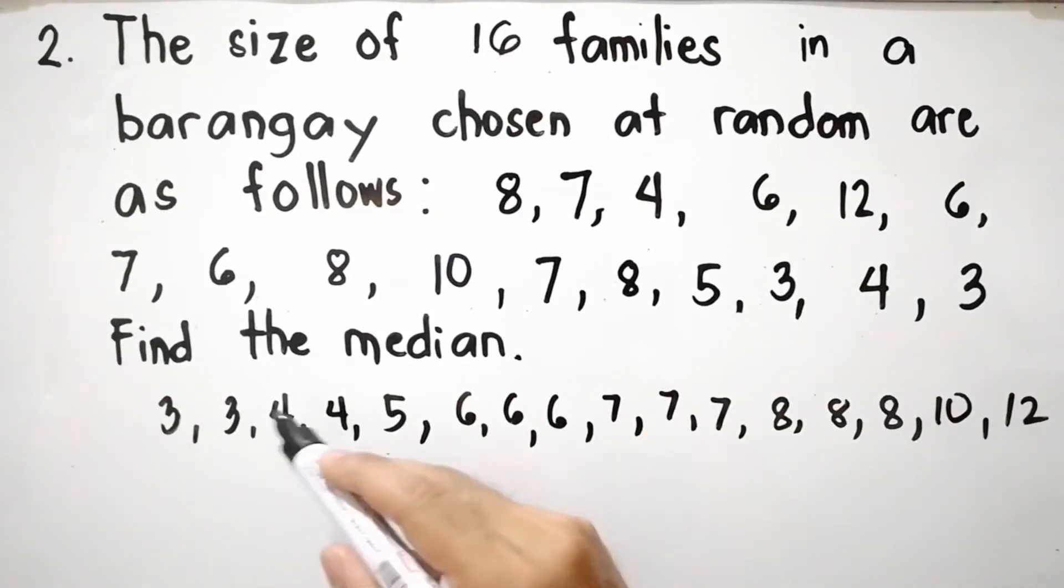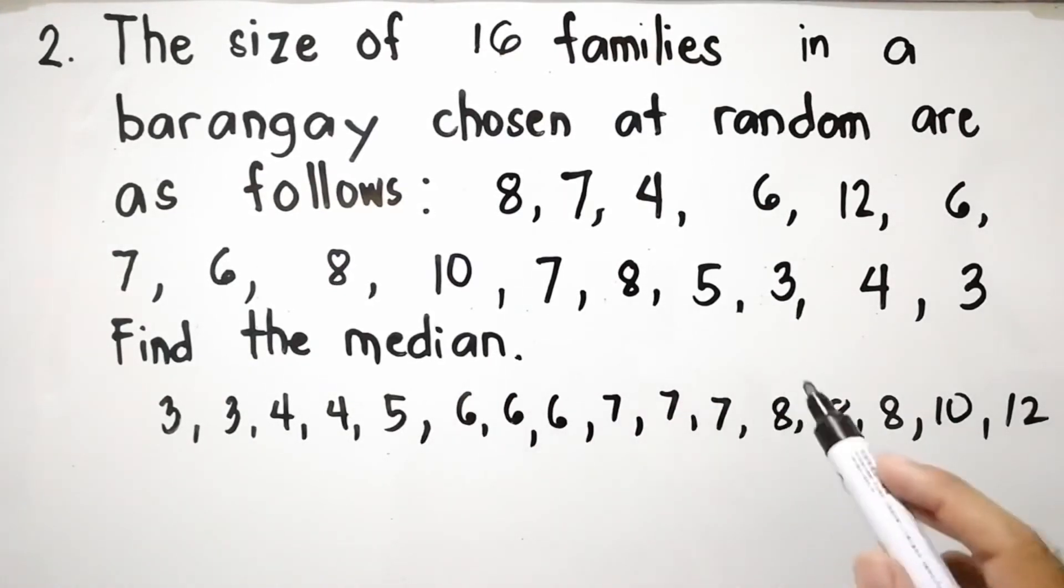Counting the values: 1, 2, 3, 4, 5, 6, 7, 8, 9, 10, 11, 12, 13, 14, 15, 16. So we have 16 families.